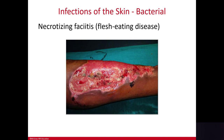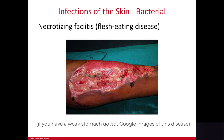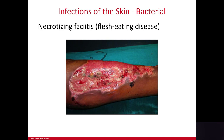Necrotizing fasciitis occurs when certain strains of staph or streptococcus bacteria produce toxins so toxic they start to digest surrounding tissue. It can start very suddenly and spread rapidly into surrounding subcutaneous and muscle tissue. The destruction can be a very small or a very large area. It is usually treated with surgical removal of infected or dead tissue and heavy doses of IV antibiotics. The risk of death is around 30 to 35 percent. These patients are typically treated in burn units because of the extensive wound care required.